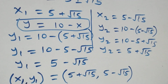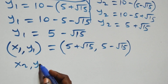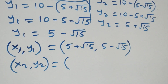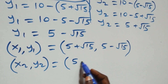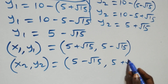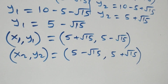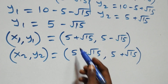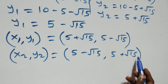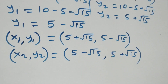The second set of solutions in the form (x₂, y₂) is therefore x₂ equals five minus root fifteen, y₂ equals five plus root fifteen. When we look at these solutions, we discover that x₁ is the same as y₂, and y₁ is the same as x₂ — the values of x and y are symmetric between the two solution pairs.